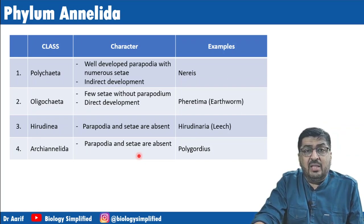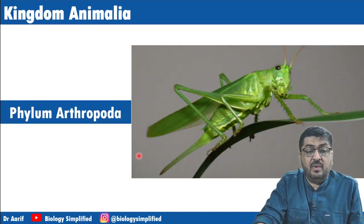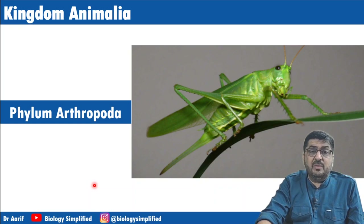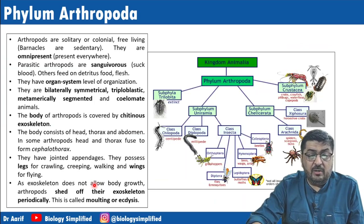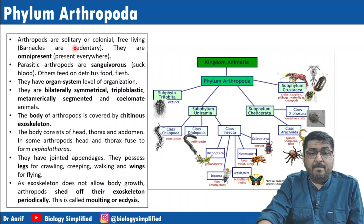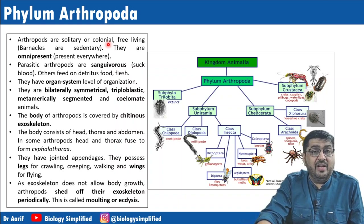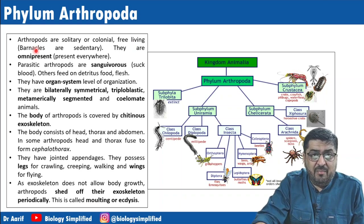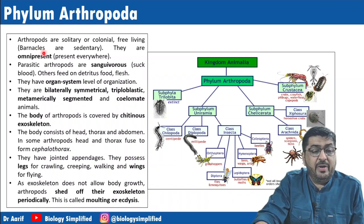After Annelida comes Phylum Arthropoda. Arthropods are the biggest phylum of the animal kingdom — the largest number of animals belongs to Arthropoda. Arthropods can be solitary or colonial, free-living, and even sedentary — for example barnacles. They are present in all habitats. Parasitic arthropods are sanguivorous.